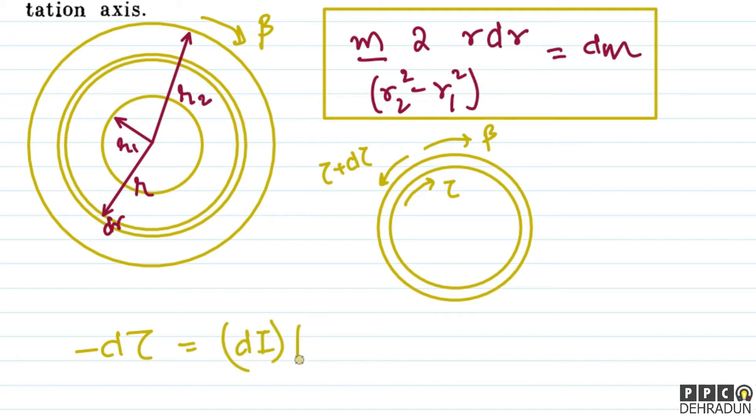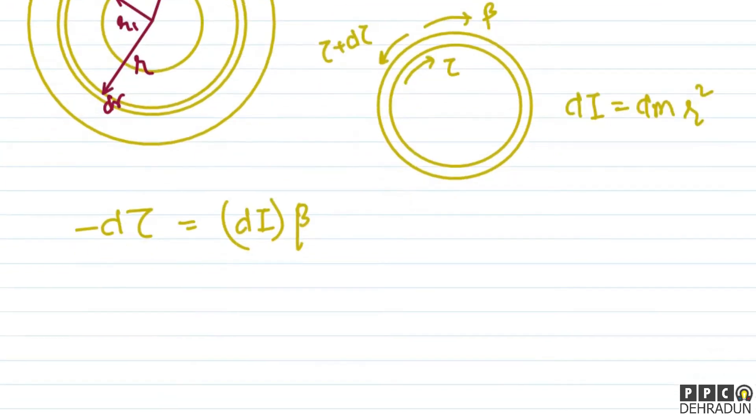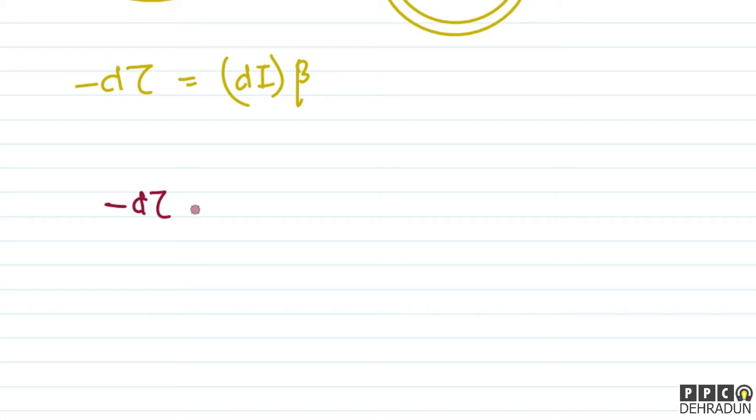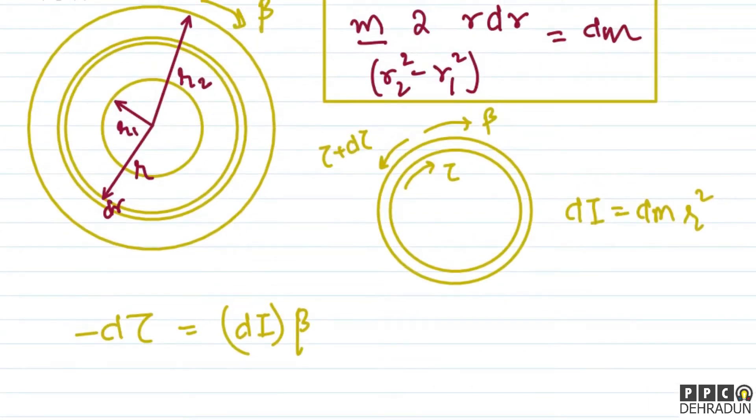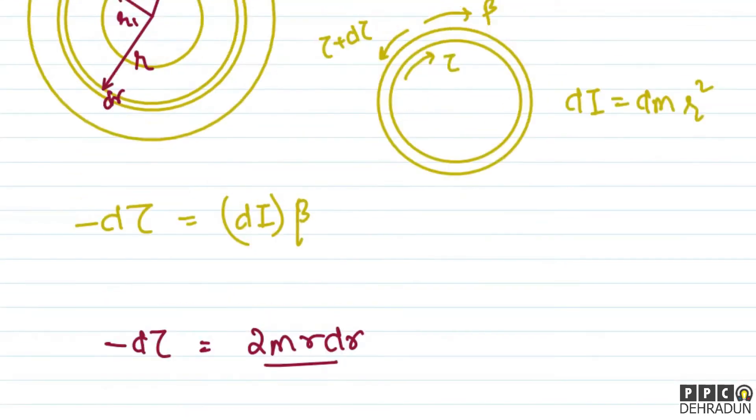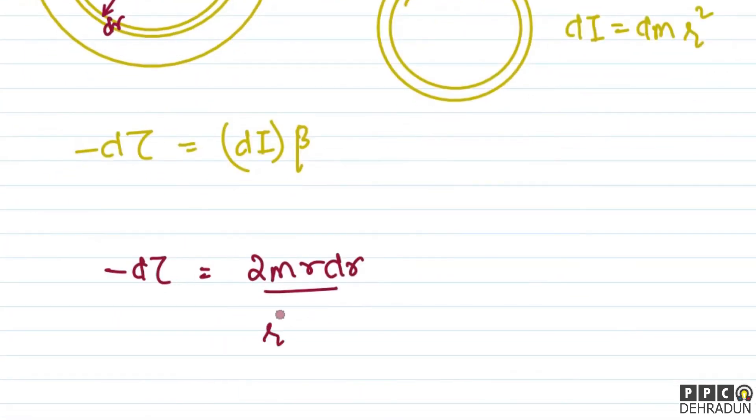So, we can write net torque equals its moment of inertia times its angular acceleration beta. We'll write here dI into beta. So, what is dI? dI will be equal to dm into r square. So, we can do further calculation here. We can write: minus d tau equals dm, and in place of dm we can write 2mrdr upon r2 square minus r1 square, multiplied by r square, and then beta.